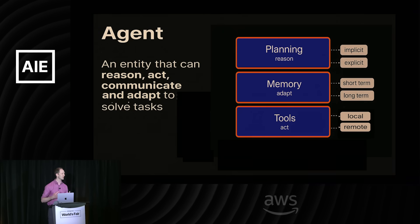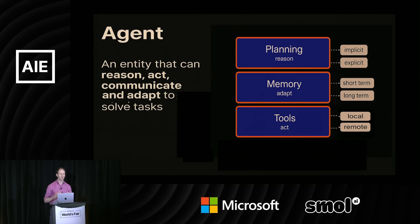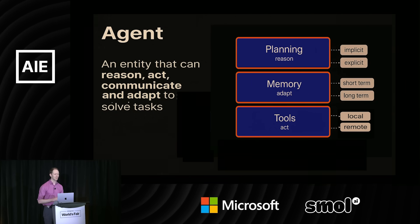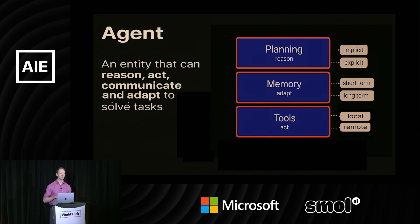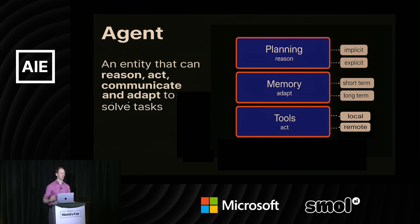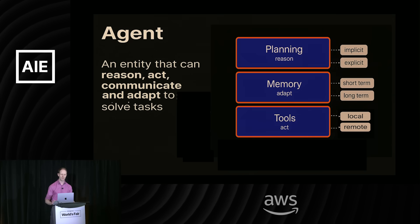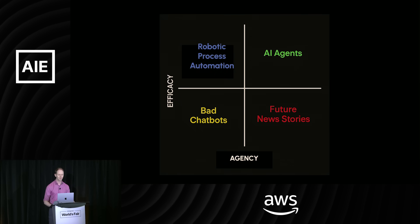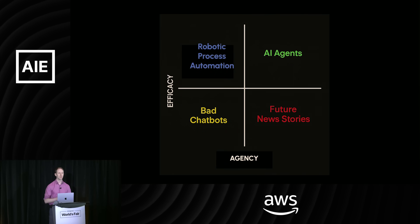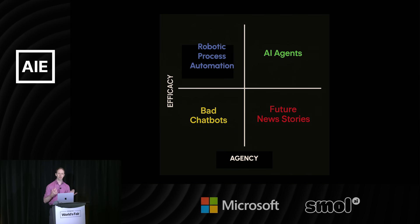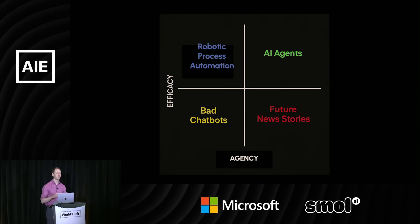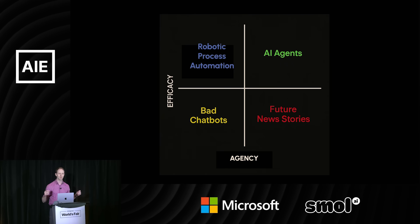To give a brief definition: I'm defining an agent as an entity that can reason, act, communicate, and adapt to solve tasks. We treat the foundation model as the foundation, and then add additional components to increase performance and effectiveness in different scenarios. There's been a lot of discussion about what constitutes an agentic system, and Andrew Ng helped clarify that it's not a binary distinction — it really is a continuum, a spectrum.